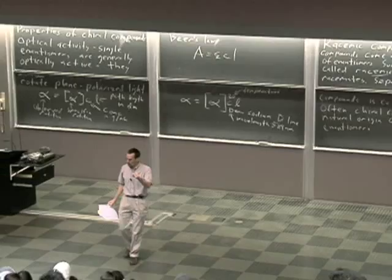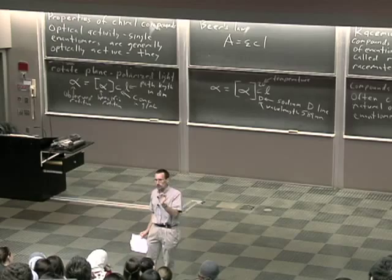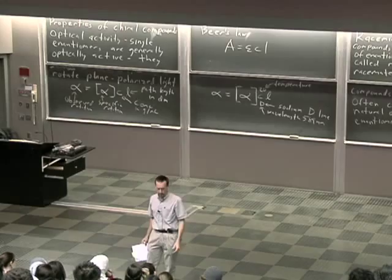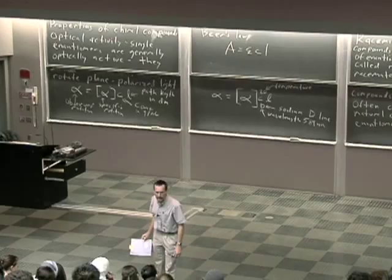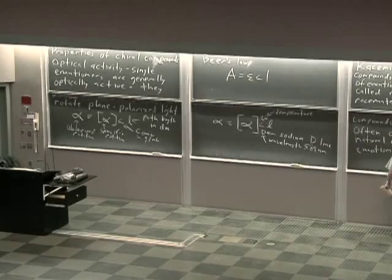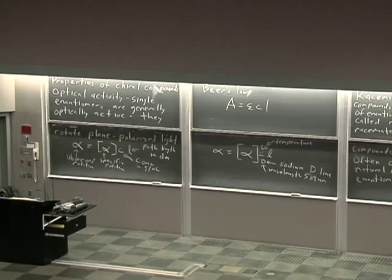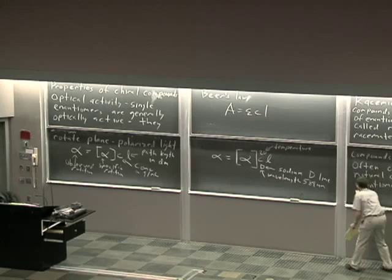One generalization: chiral compounds of natural origin often come as single enantiomers. For example, if I open a bottle of wine and find crystals on the cork, those crystals are a tartrate salt. We saw tartaric acid in the previous lecture. Those crystals represent one enantiomer of the tartrate salt — the natural 2R,3R tartaric acid, which is the one you get from grapes. Conversely, many synthetic compounds come as racemates — not always; it depends on what you start with.